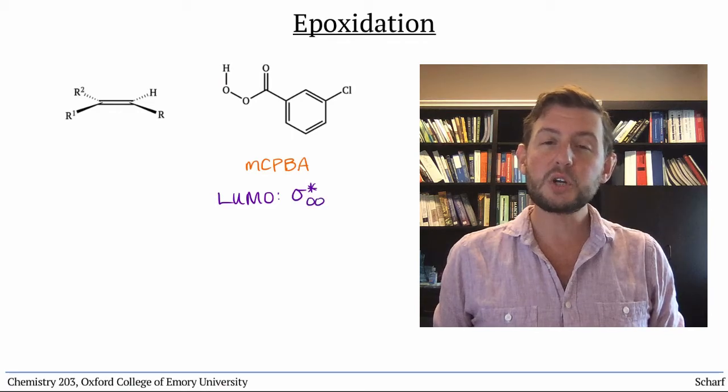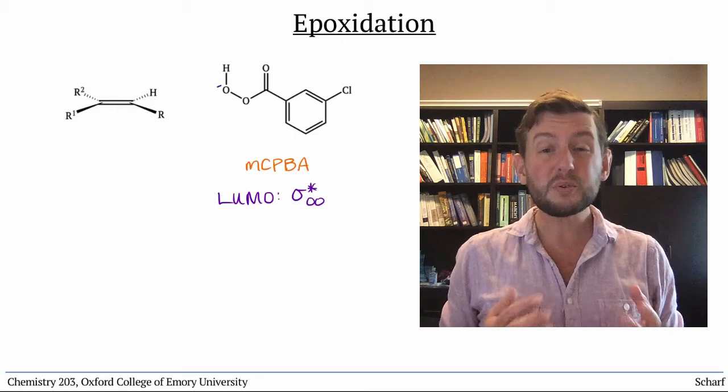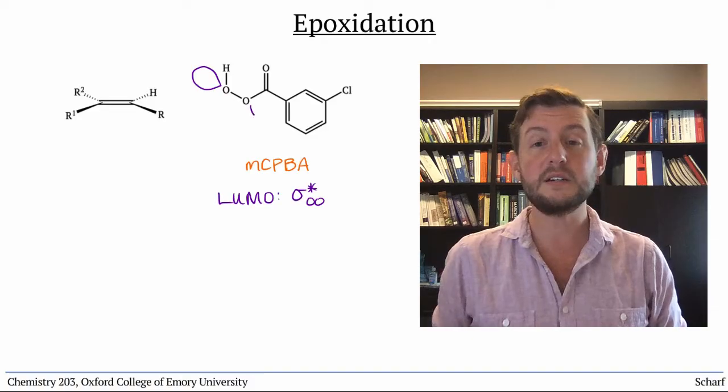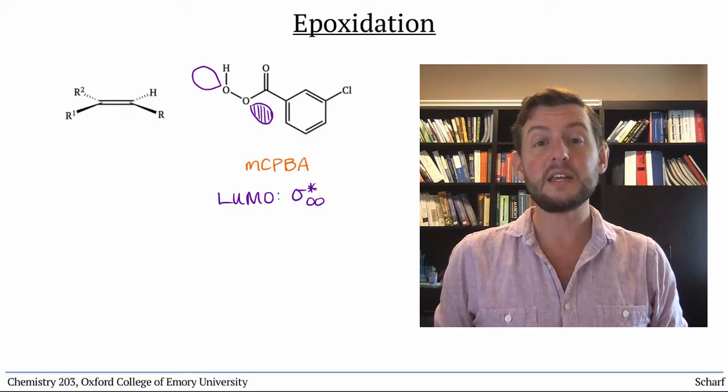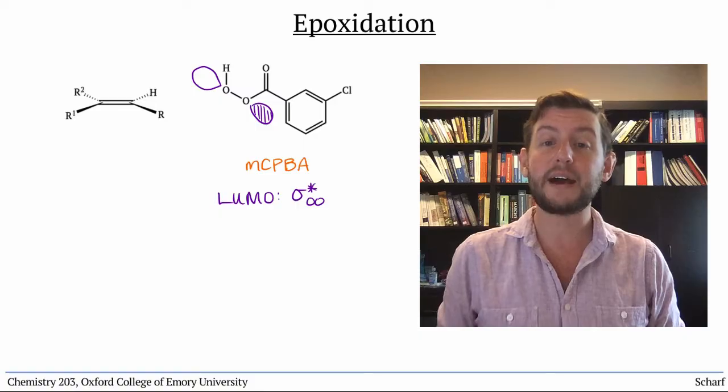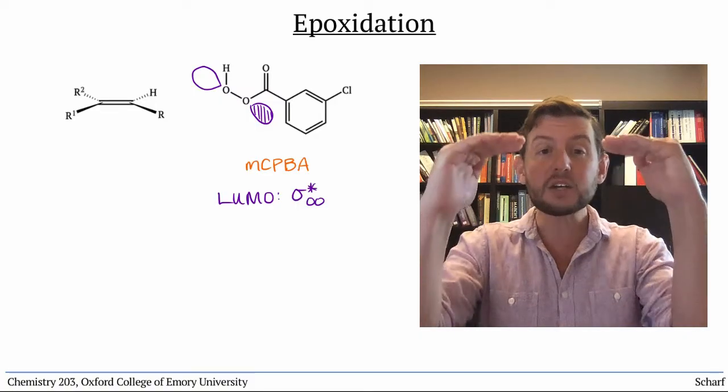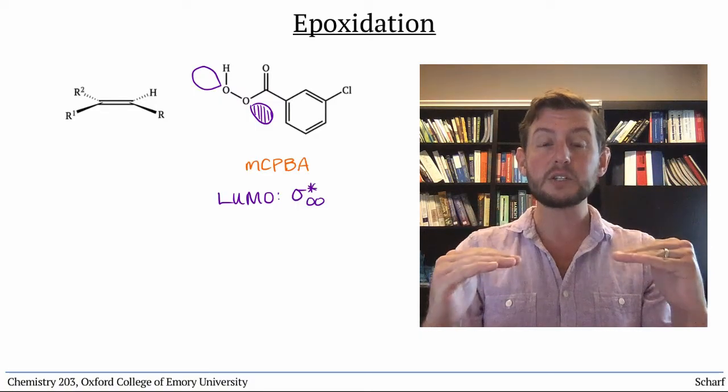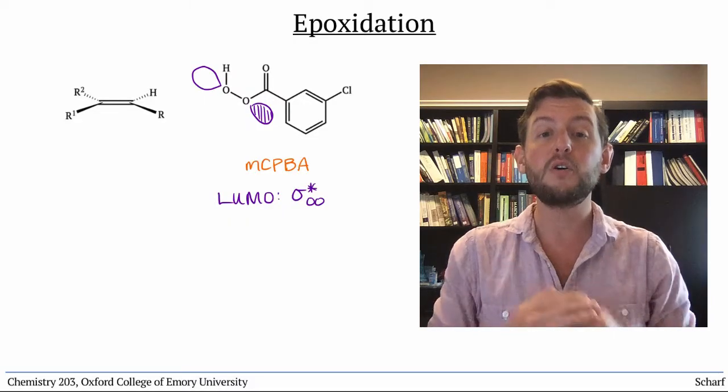Based on our original ordering of MOs, you'd probably think that pi-star-CO is the LUMO. But it turns out that having two electronegative atoms bonded to each other actually lowers the sigma-star-OO below pi-star-CO.